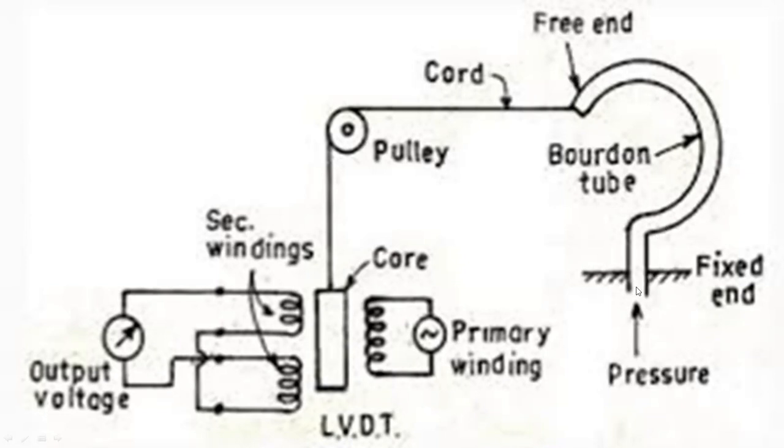Here, we are seeing this as a Bourdon tube, or it can be a diaphragm, which converts these physical quantities of pressure, weight, etc. into a displacement. This displacement in turn is connected to the core of the LVDT to give the electrical signal.